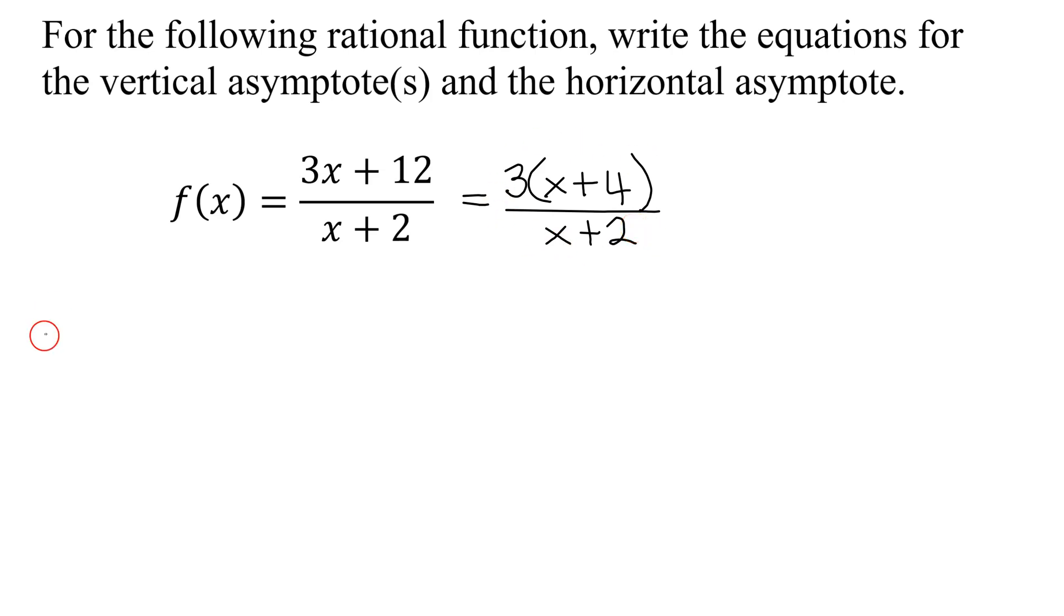Now to find the vertical asymptotes, all you have to do is find the zeros of the denominator. So you set the denominator equal to 0. Subtract 2 from both sides, you get x equals negative 2. So that is the equation of my one vertical asymptote in this problem.